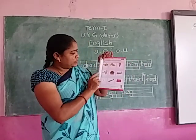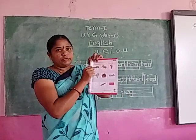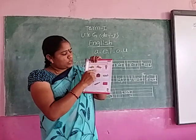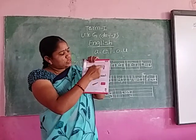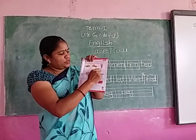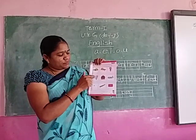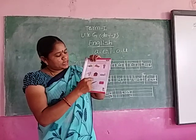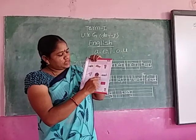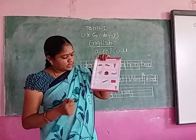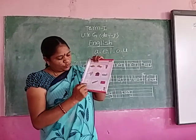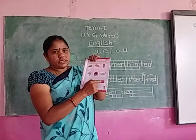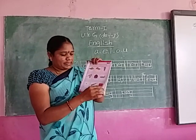Look at the picture and complete the work. Which picture is it? C-A-P cap. What is it? C-O-T cot. C-U-T cut. What is it? N-E-T net. H-U-T hut. J-E-T jet. D-O-T dot. B-A-T bat. M-A-T mat.